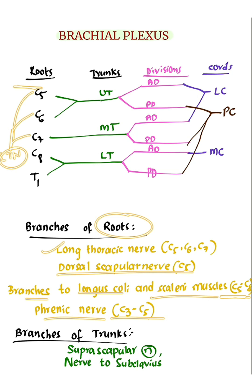Branches of trunks: Only upper trunk gives branches. It gives 2 branches: Suprascapular nerve and nerve to subclavius.